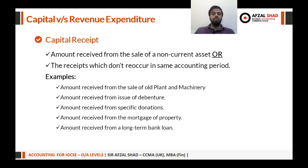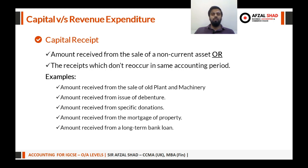Examples of capital receipts include: the amount received from the sale of an old plant and machinery; the amount received from the issue of debentures — all amounts received against a debenture are termed as a capital receipt; and the amount received from specific donations. Specific donations are not recurring in nature — they tend to come in larger amounts, so they can be termed as a capital receipt. The paper will make clear whether something is recurring or not.